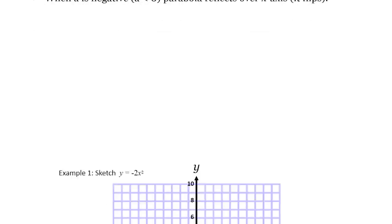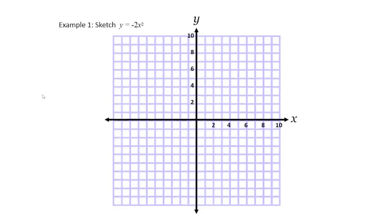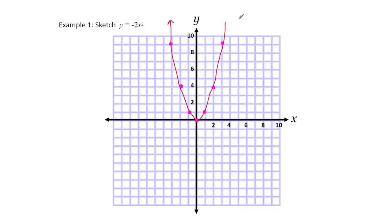Let's quickly sketch y equals negative 2x squared. Whenever you're sketching, you should put in the original parabola to help yourself out. You need to memorize these values: 1 squared is 1, 2 squared is 4, 3 squared is 9. Parabolas are reflective, so draw the exact same thing on the other side. You're going to get really good at sketching these and connecting the dots.